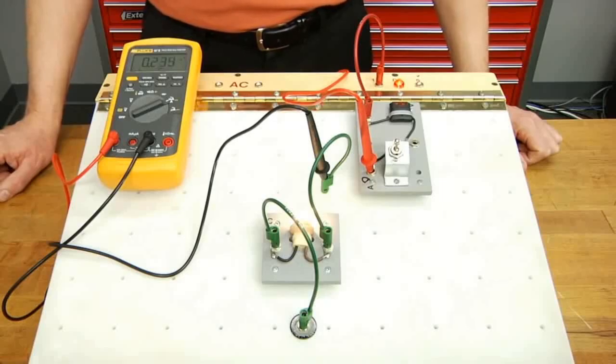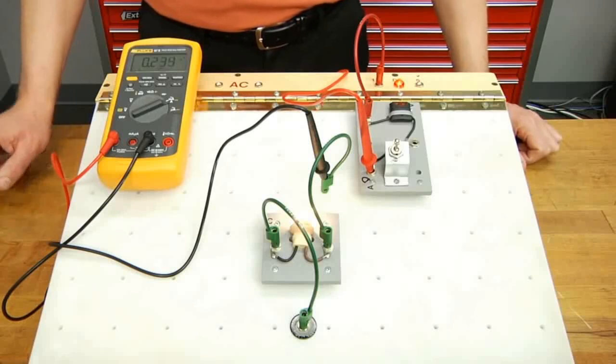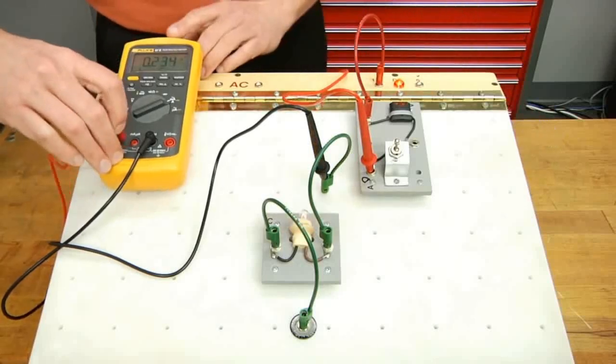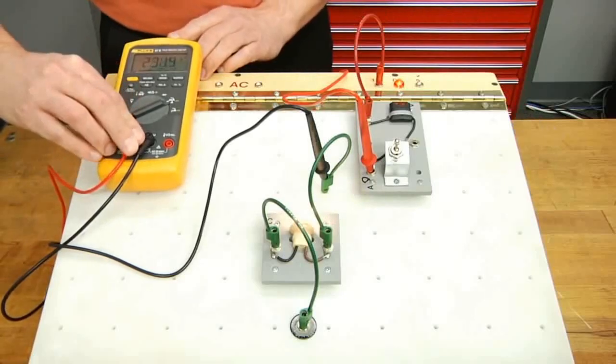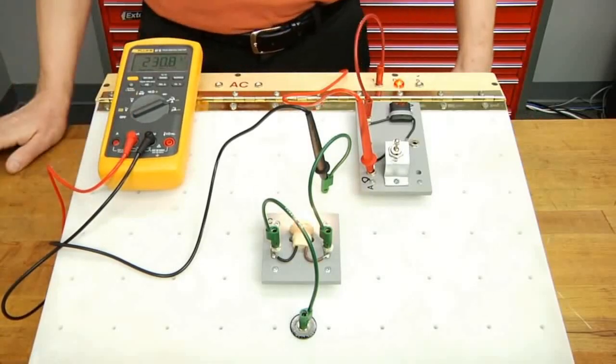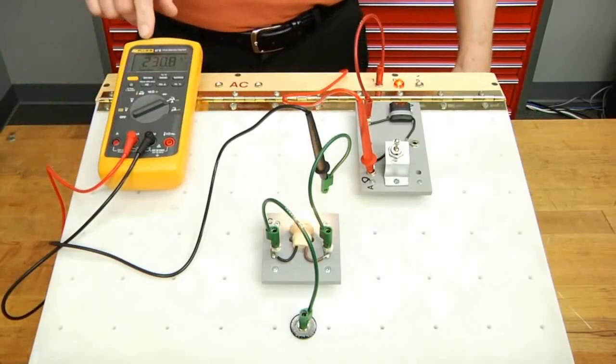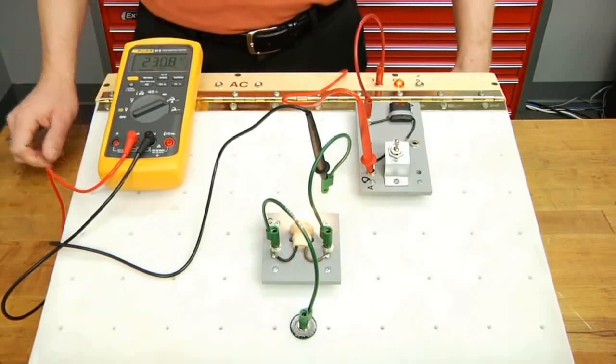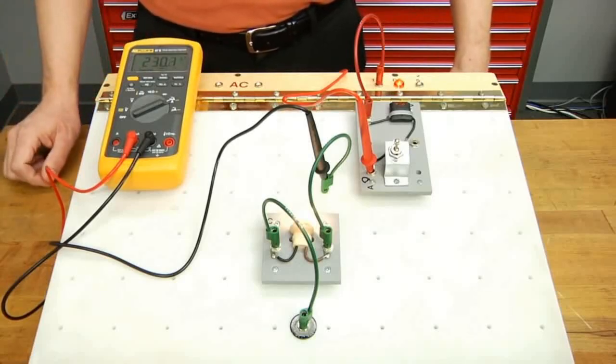Since we are below our 400 milliamp threshold, if we want to find a resolution, we can simply move our lead over to the milliamp microamp input and read a higher resolution on our meter. Indeed, we can see we are now reading 230.6 milliamps.